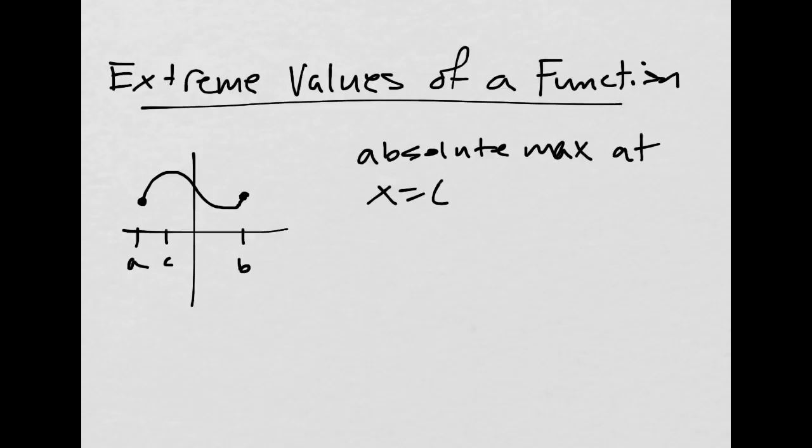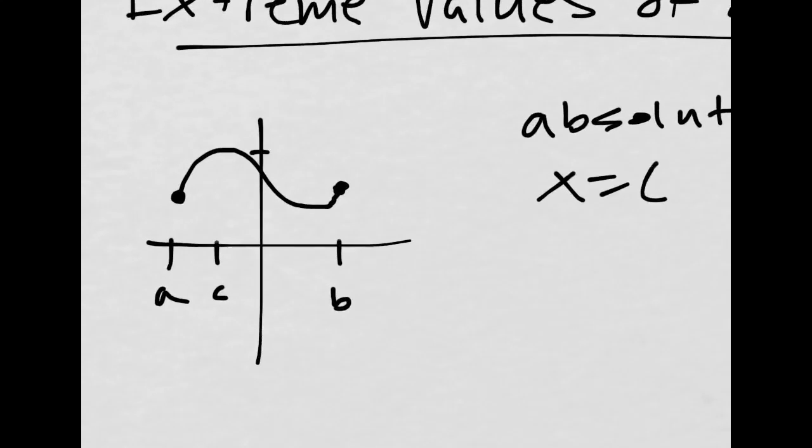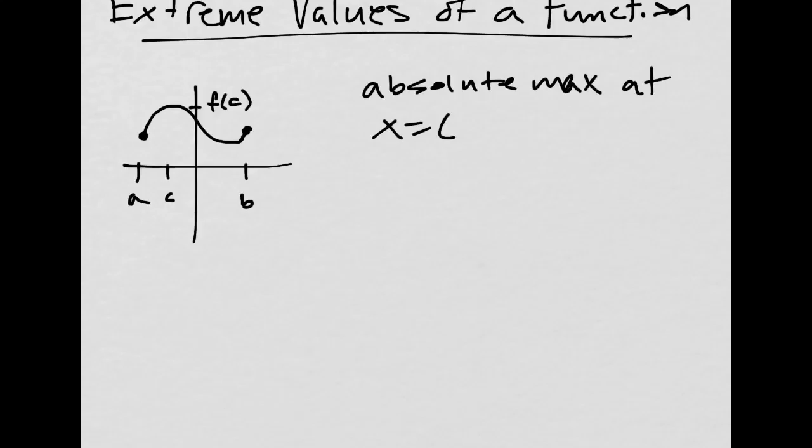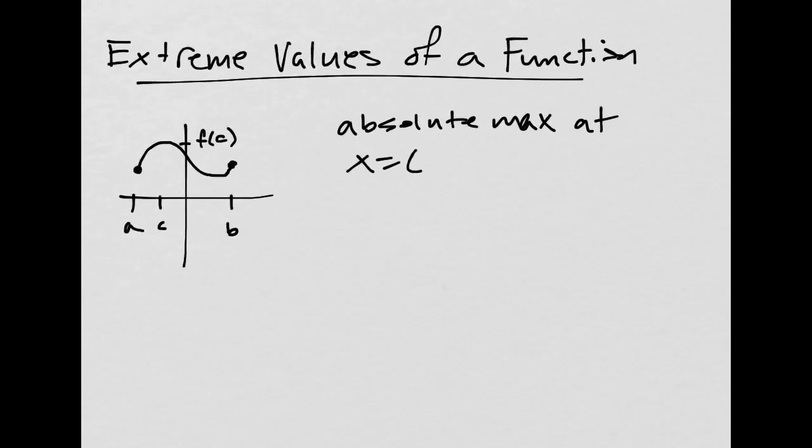Now, we don't know what that absolute maximum value is, but let's just call this C, not C prime, because that looks like the derivative. We'll call it F of C. So we'd say absolute maximum at X equals C, value of whatever F of C is.